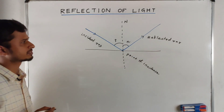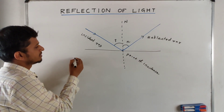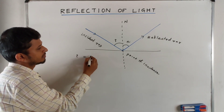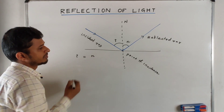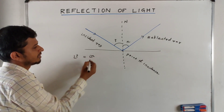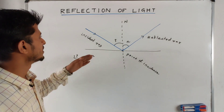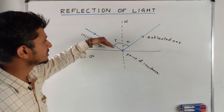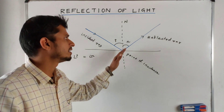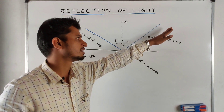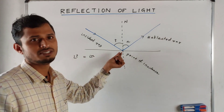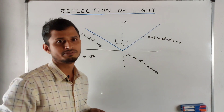The first law of reflection is that the angle of incidence is equal to the angle of reflection. The second law of reflection states that the incident ray, the normal, and the reflected ray at the point of incidence all lie in the same plane.